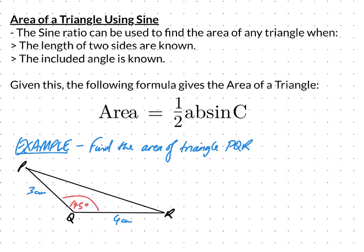The sine ratio in trigonometry can be used to find the area of any triangle, doesn't just have to be right angle triangles, when you have these two situations: the length of two sides are known, and the included angle is also known.